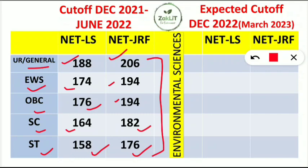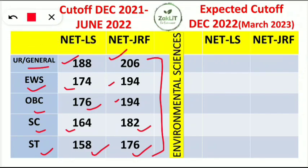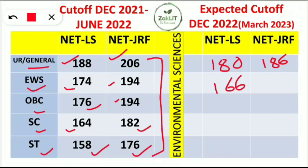Now we will know the expected cut-off for this year so you can know how much it can go. This is just our prediction, as I am repeatedly saying. For the General category NET LS, the cut-off this time may go to 180 marks; if you are scoring 180 or more, it is well and good. NET JRF will be 186 or above. For EWS, the NET LS cut-off may go to 166, as there is a dip expected this time.